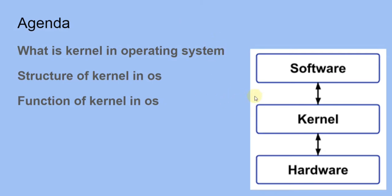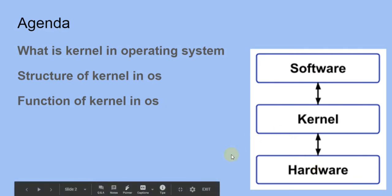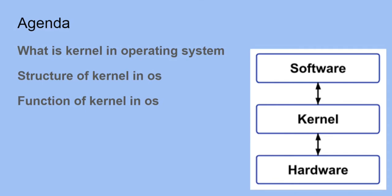In this picture, you can see that we have a software, we have a kernel, and we have hardware. Kernel works as an interface between software and hardware. It is one of the most important because it is the bridge amongst the software and hardware, combining these two things with the help of some kind of functionality provided to the software and hardware.